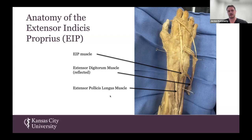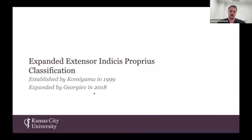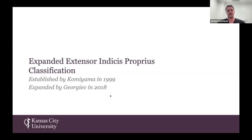While this is the classic morphology seen in the extensor indices, it has been found to be an area of intense anatomic variation. Initially, these variations were described by Komuyama in 1999. He established a classification system in which he found four main types and a total of eight subtypes. In 2018, Georgev expanded this classification to include 24 different subtypes. Currently, our study has expanded the classification further to include 29 different subtypes. As there are 29 subtypes, I'm not going to talk in depth about each of them, but I'm happy to discuss at a future time.